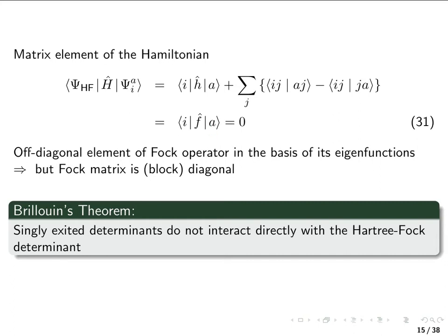Now if these orbitals which we used here are the eigenfunctions of the Fock operator, then of course the Fock matrix, as we had discussed before, in the basis of its eigenfunctions is diagonal, which means that this off-diagonal element is zero.